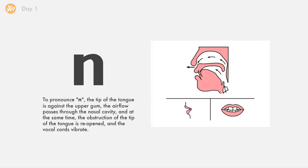The next one is n. To pronounce n, the tip of the tongue is against the upper gums. The airflow passes through the nasal cavity and at the same time, the obstruction of the tip of the tongue is reopened and the vocal cords vibrate.